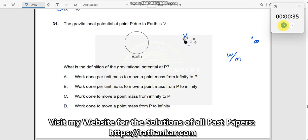And if you want to find the absolute potential, that means you are moving the object from infinity to the point P. Now, which is the answer? Work done per unit mass. How did I get this?